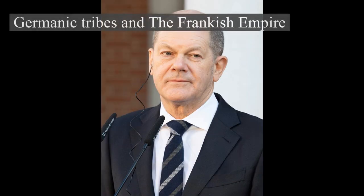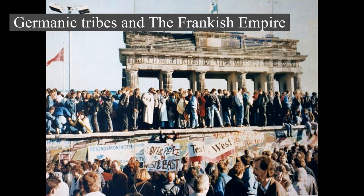Germanic tribes and the Frankish Empire: The Germanic peoples are thought to date from the Nordic Bronze Age, Early Iron Age, or the Jastorf culture. From southern Scandinavia and northern Germany, they expanded south, east, and west, coming into contact with the Celtic, Iranian, Baltic, and Slavic tribes.